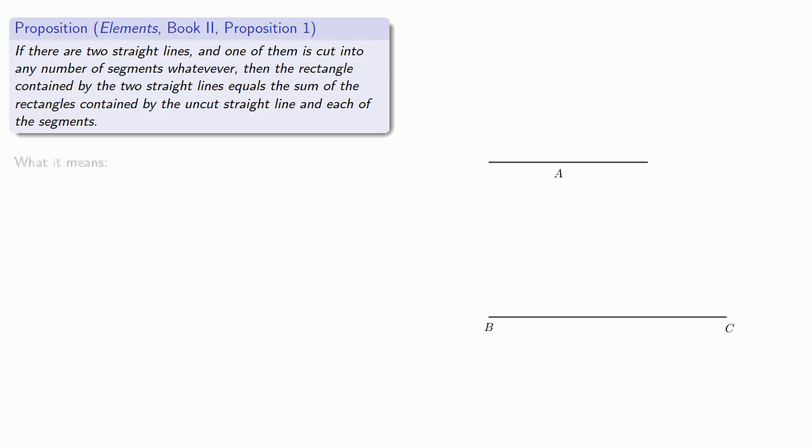So let's see what this means. Now it's important to keep in mind that when Euclid or other Greek geometers talked about a line, they meant a finite object. A line had a beginning and an end. Let A and BC be two straight lines and let BC be cut at points D, E and so on. Now we'll form a rectangle with base BC and height A.